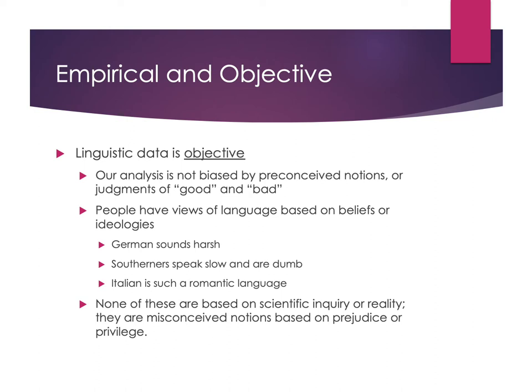Take the idea that southerners speak slow and are dumb. If you actually look empirically at data of how southerners speak versus how non-southerners speak English, they speak at the same rate — the same speed. They're just interpreted in a certain way, which leads to beliefs about those people based on the kinds of language they use. But there's nothing scientifically valid about that.